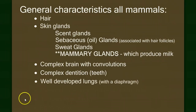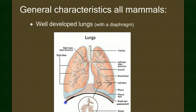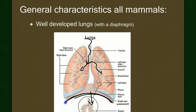The next characteristic is well-developed lungs with a diaphragm. The mammalian lung has good gas exchange — not as efficient as birds with their extra air sacs, but pretty efficient. We have a muscle underneath the lungs called the diaphragm that controls breathing. When this muscle contracts and drops down, it creates negative pressure, which sucks air into the lungs. We call this negative pressure breathing, contrasted with the positive pressure breathing seen in amphibians.